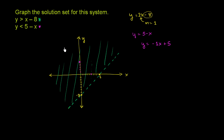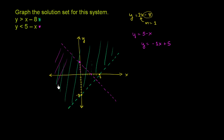The line will look like this, and again I want a dotted line because it says y is less than 5 minus x. If it were y equals 5 minus x or y less than or equal to 5 minus x, I would use a solid line. But it's only less than. For any x value, 5 minus x sits on the boundary line, and we care about y values less than that.